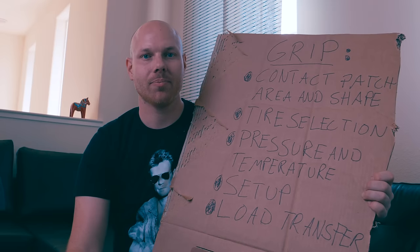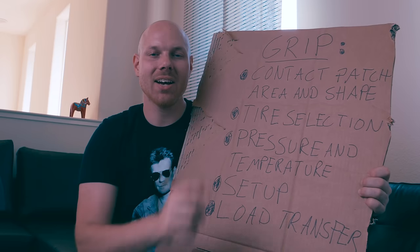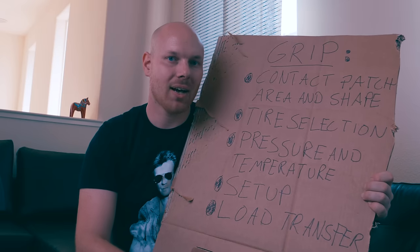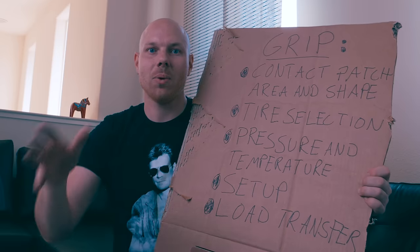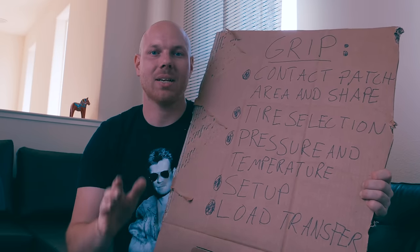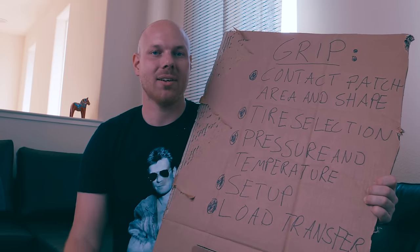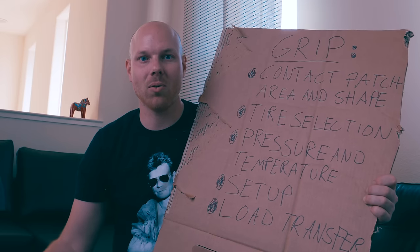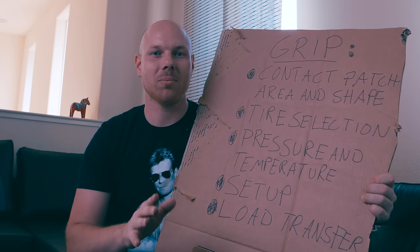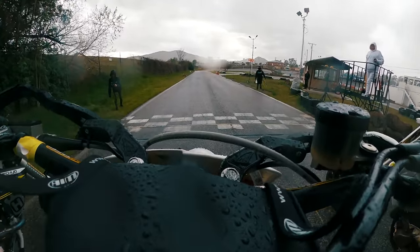Let's conclude what we learned today. We understand that grip is highly affected by the contact patch size and shape. We also understand that tire selection is crucial if we want to maximize available grip — different tires have different compounds and different carcass constructions which deflect in different ways. We understand that pressure and temperature are key concepts to maximize grip. We also understand that it's very important how we set up the motorcycle, because this affects how load transfer happens when we ride it. And of course, this also comes down to how we ride it. Remember to subscribe to my channel — there is always something new to learn.